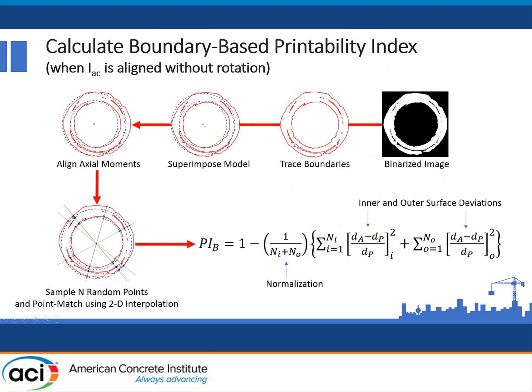To make this happen, for example if we align the axial centroidal moment of inertia, we binarize the image, locate the surfaces, superimpose the model on the actual surface, align the axial centroidal moments of inertia, and run N random points to the surface to do point matching. We then compute a boundary-based printability index — a fidelity — according to where the boundary is. We penalize for deviations in the inner and outer surfaces, sum the squares, divide by the number of points sampled, and subtract that from one to make the printability index vary from zero to one, where zero is an object that couldn't be printed and one is a perfectly printed object.